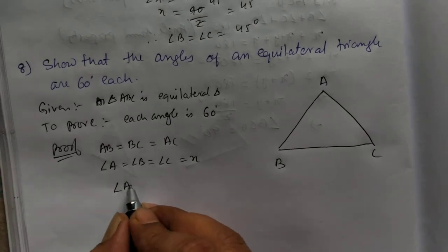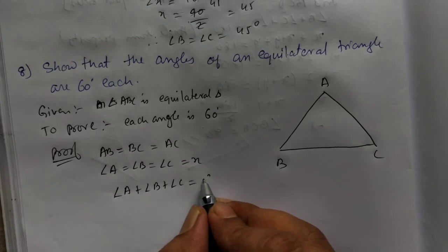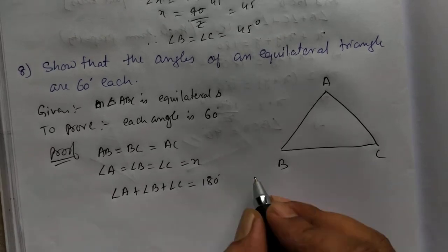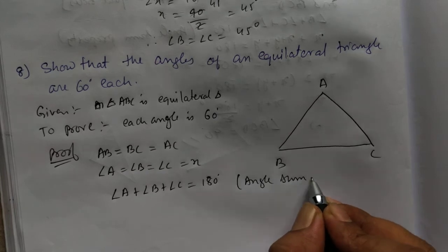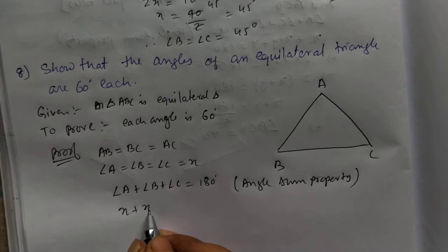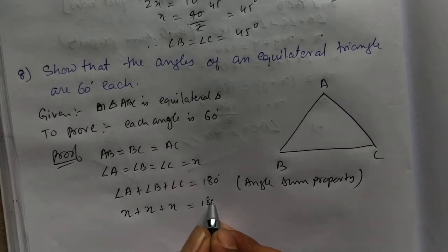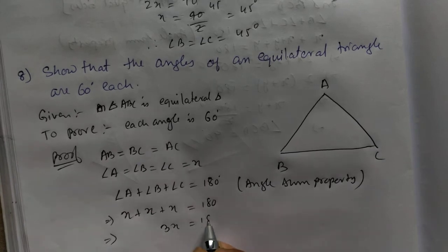Now, if you use angle sum property, it will be 180 degree. Reason is: angle sum property. Put the value X plus X plus X is 180. 3X is 180.